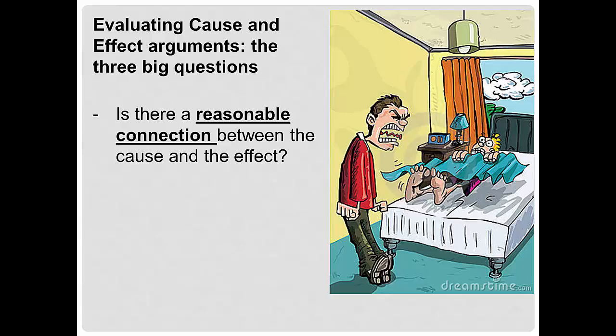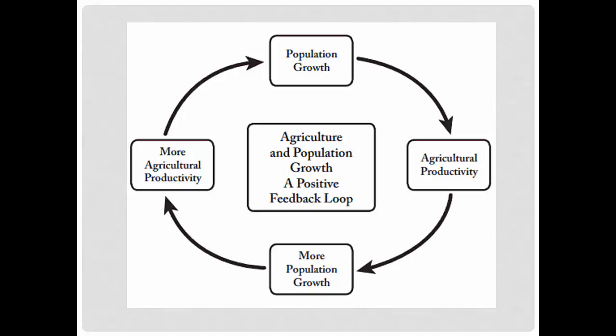To complicate the picture, population growth and agriculture were probably mutually reinforcing. More population and more food surplus meant more people who had time to think about ways to produce more food through selective breeding, better tools, irrigation techniques, etc. Finally, there's the third and really important question: might there be some other possible causes — including earlier causes that are the real underlying reason for the cause and effect you think you've observed?